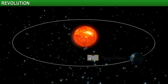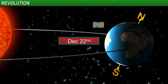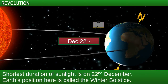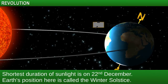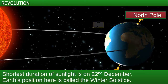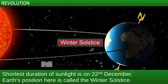The reverse happens in the southern hemisphere — with less sunlight the days are shorter and the nights are longer. Following the Earth's orbit, the Earth reaches another turning point on December 22nd. This is when the Earth reaches the other end of its orbit, and the north pole is facing away from the Sun. This position of the Earth is known as the winter solstice.